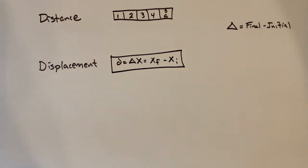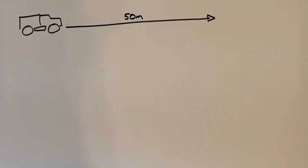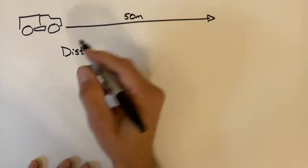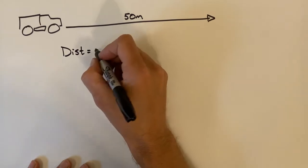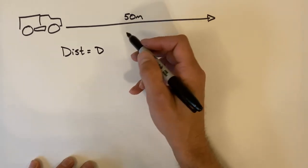So let's take a look at how to use this equation. Let's look at the situation of a truck driving forward 50 meters. Now let's use this situation to try to figure out how distance and displacement are different. In this case, if the truck drives forward 50 meters, the odometer would increase by 50 meters.